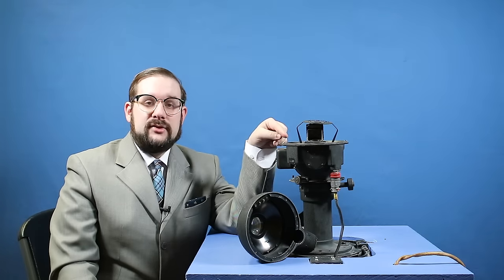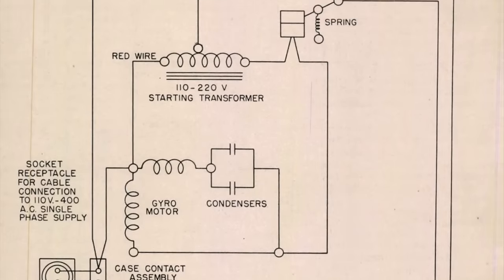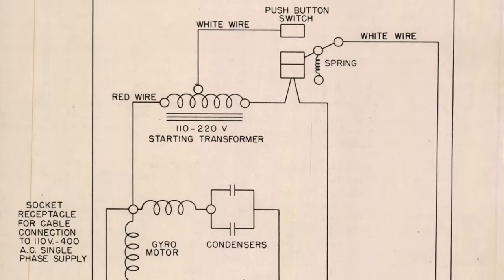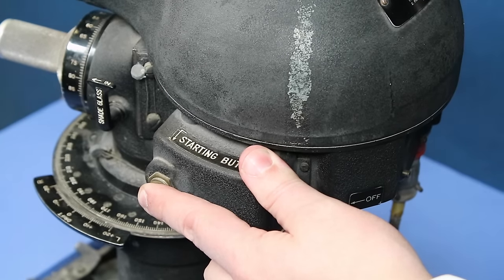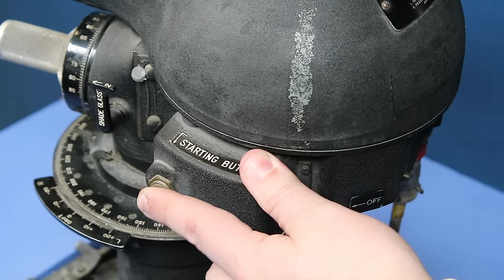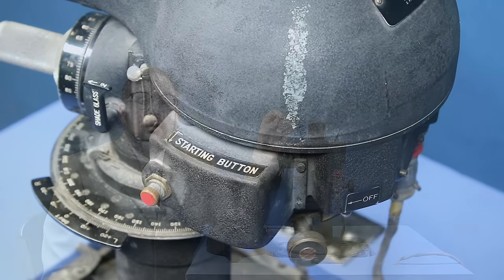Later versions of the B-3 drift sight like this one were fitted with a special startup transformer to help start up the gyroscope in cold weather. This supplied 220 volts temporarily when the starting button was pressed. When the starting button was released it would switch over to the regular 110 volt power supply.